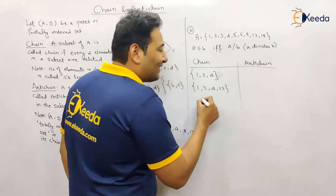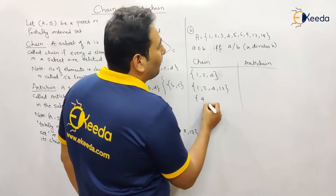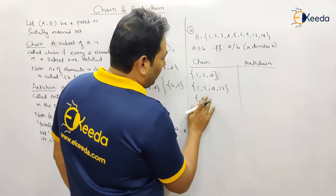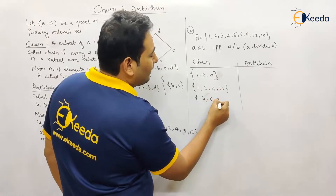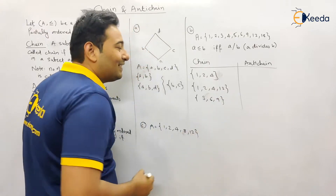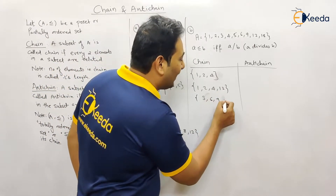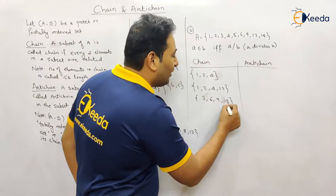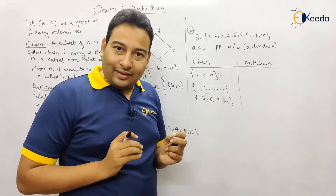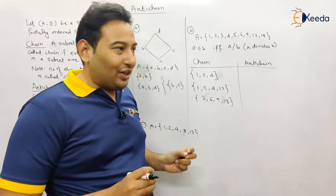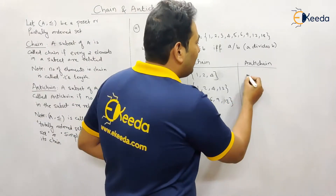Another chain could be {1, 2, 4, 12} — again it's a chain. Or {3, 6, 9} — pick any two elements and they are related, therefore it's a chain. You can add more elements; as long as any two elements picked are related, it remains a chain.